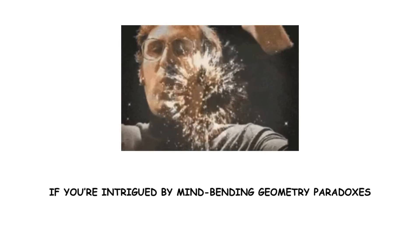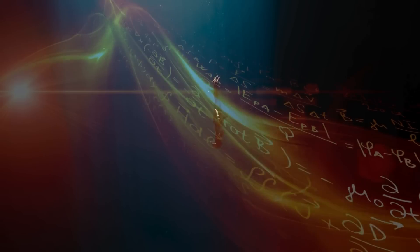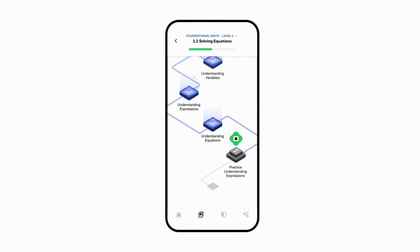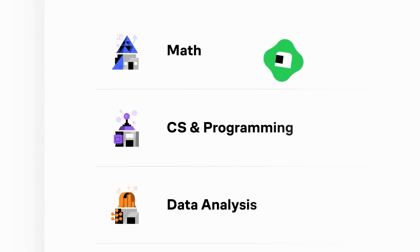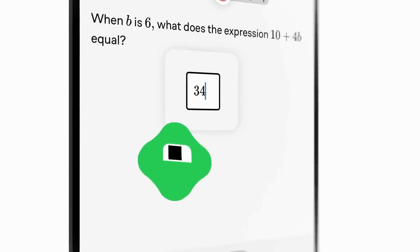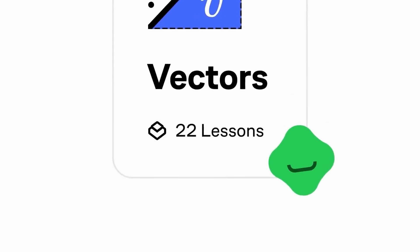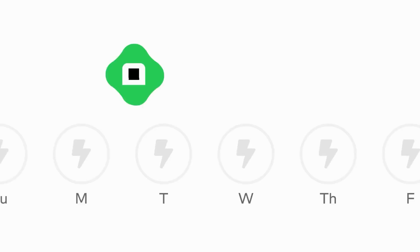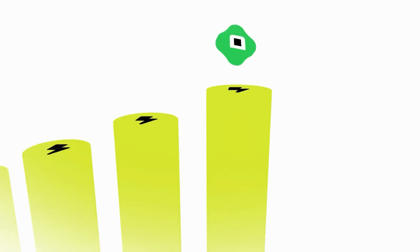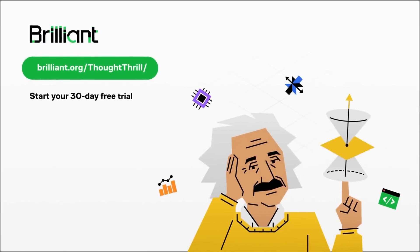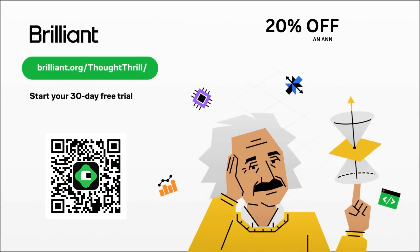If you're intrigued by mind-bending geometry paradoxes and want to dive deeper into the world of mathematics, then a great place to start is Brilliant. Brilliant is an online learning platform that emphasizes hands-on learning, hosting thousands of interactive lessons in math, data analysis, programming, and AI. Learn concepts starting from first principles and building your way up, with an interactive approach shown to be six times as effective as lecture videos. Brilliant's Vector course teaches you about vectors, which are a key mathematical tool for describing position, motion, and orientation. Learn the fundamentals of vector operations and use your knowledge to program your own game. To try everything Brilliant has to offer for free for a full 30 days, visit brilliant.org slash thoughtthrill or click on the link in the description. You'll also get 20% off an annual premium subscription.